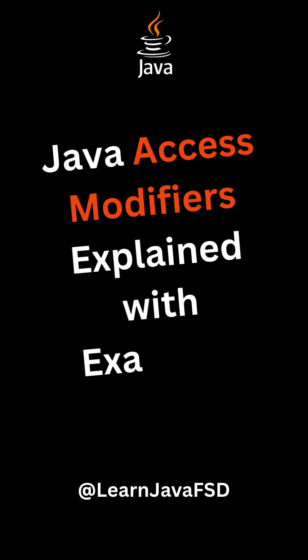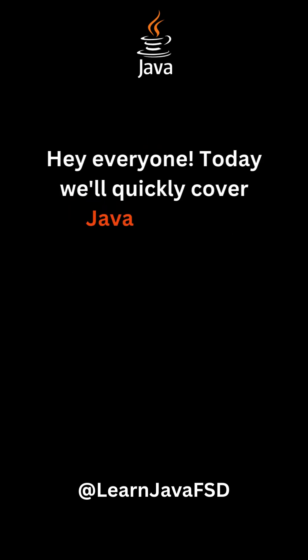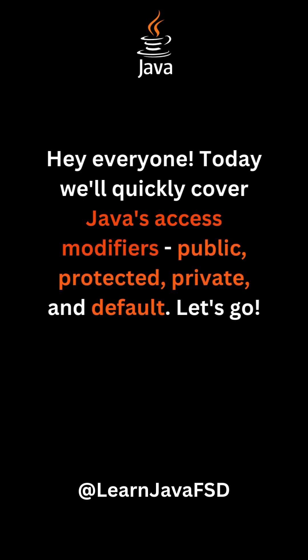Java access modifiers explained with examples. Hey everyone, today we'll quickly cover Java's access modifiers: public, protected, private, and default. Let's go.